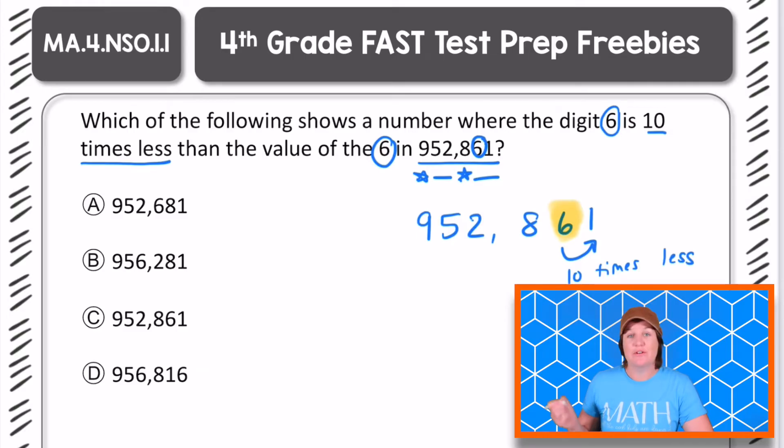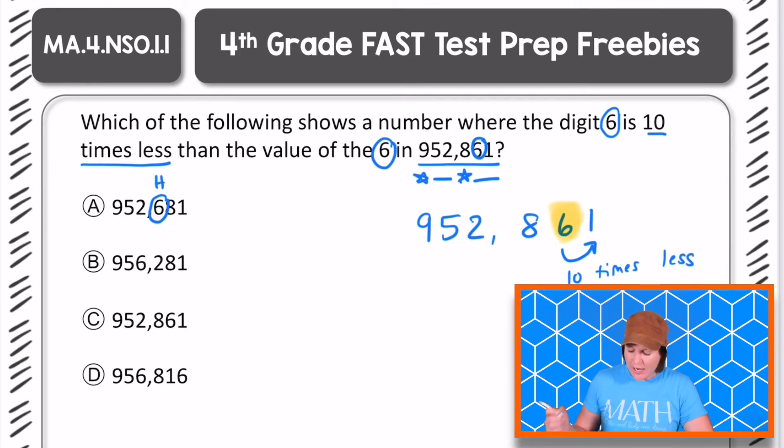So for choice A, we have 952,681. All we're really paying attention to is where is that 6 located? And here it's located in the hundreds place. But our mission is to find the number that has the 6 in the ones place. Therefore, we can eliminate A.